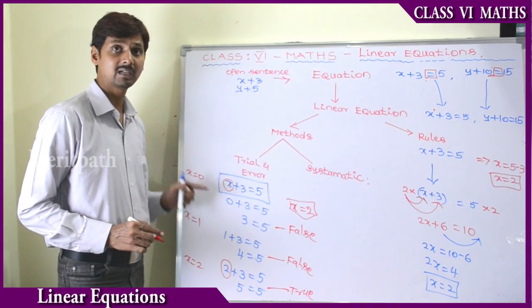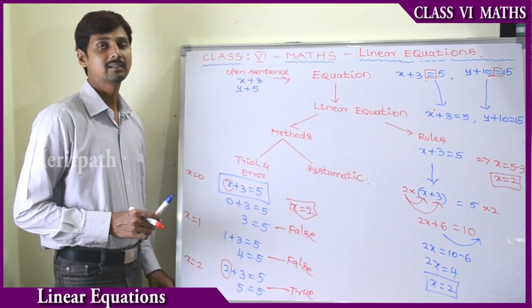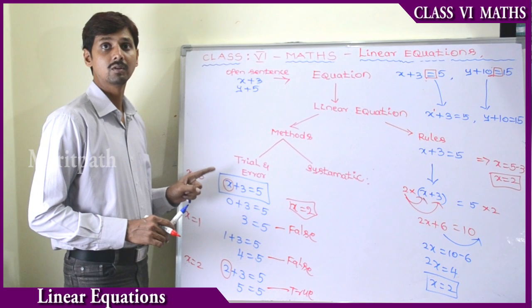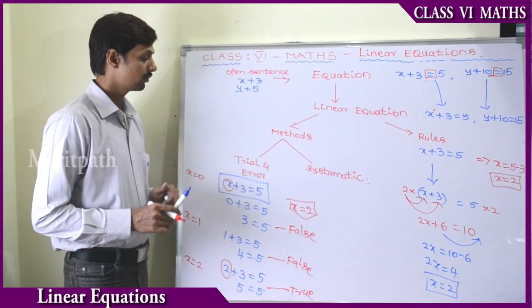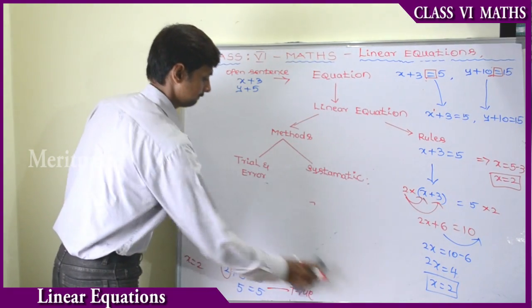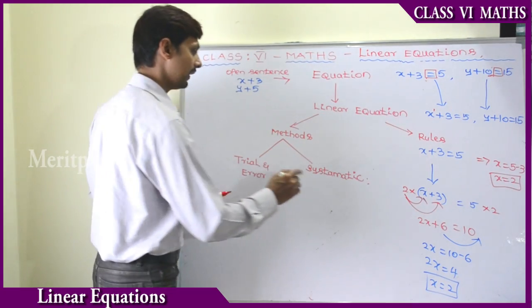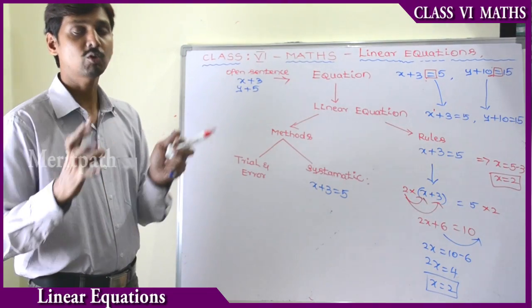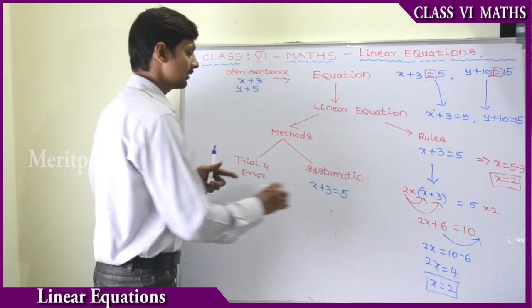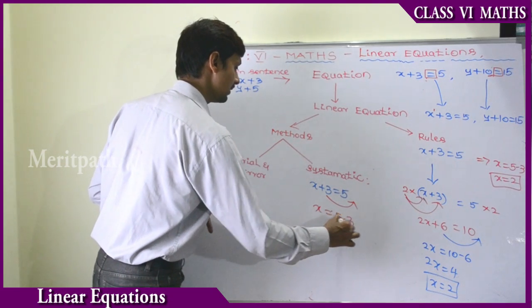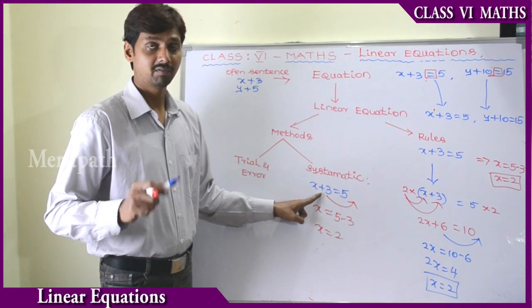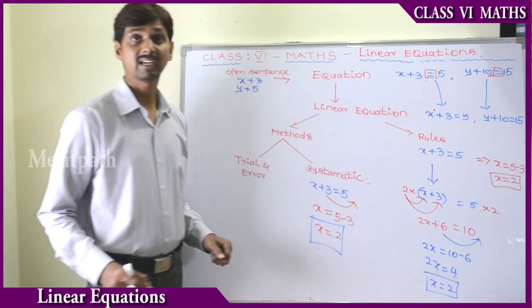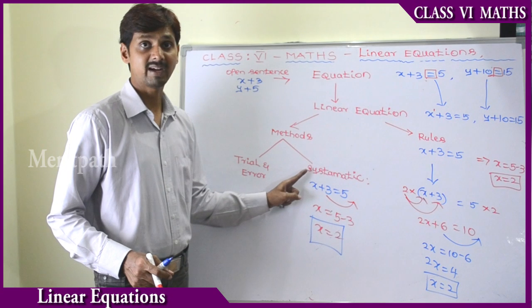This method is called the trial and error method, where we try values starting from 0, 1, 2, and so on, sometimes including negative integers, to find the value of x. Next is the systematic method. Take x plus 3 equals 5. Using transposition, we keep variables on one side and constants on the other. Transposing plus 3 to the right-hand side, it becomes minus 3. So x equals 5 minus 3, therefore x equals 2. This is the systematic method to find the value of x.